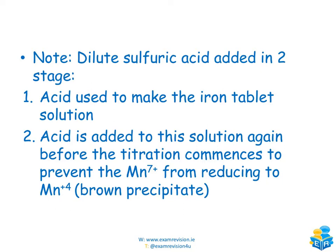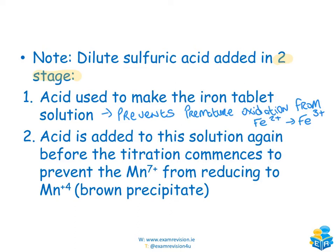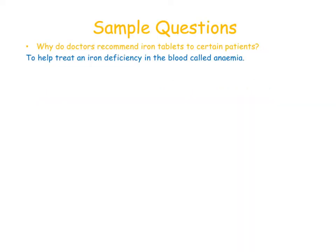Dilute sulfuric acid is added in two stages. In the first stage, the acid is added to make the iron tablet solution — it makes them easier to grind and helps prevent the iron from oxidizing with air from Fe2+ to Fe3+. The second time the acid is added is in the conical flask, just before the titration commences, to prevent premature reduction from Mn+7 to Mn+4 (the brown precipitate). We want the Mn+2 oxidation state to be obtained.